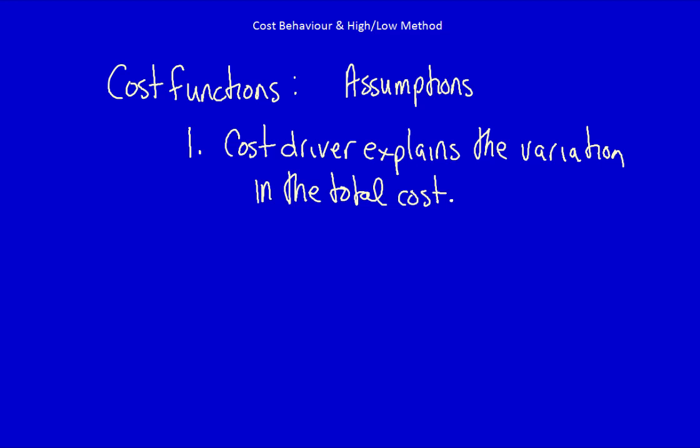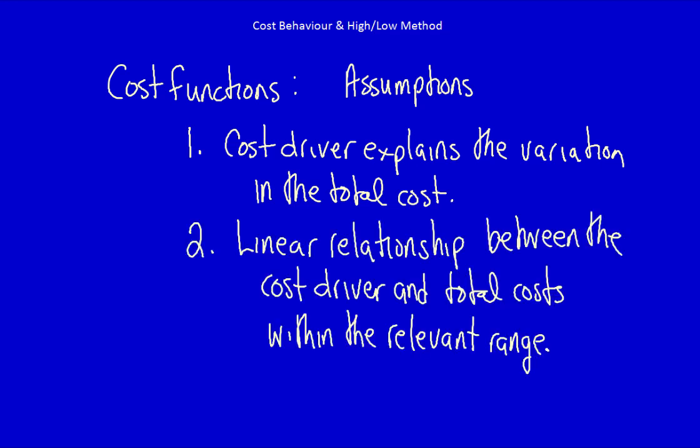Second, we assume there's a linear relationship between the cost driver and the total costs within the relevant range. This means that we assume that the relationship between the total costs and the cost driver is linear. That might not be true, but for us to use cost functions to predict the future, we simplify the relationship by assuming that it is true.